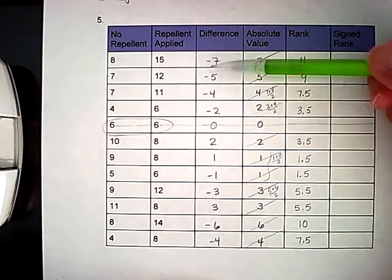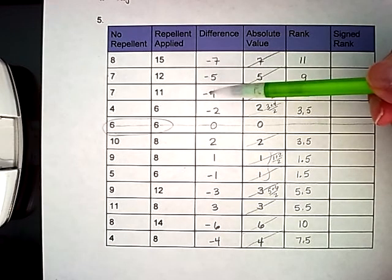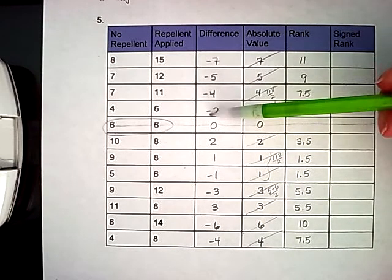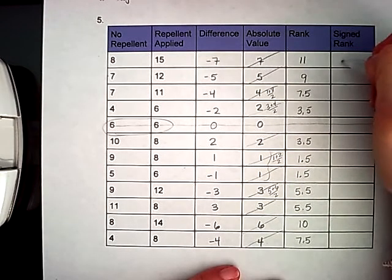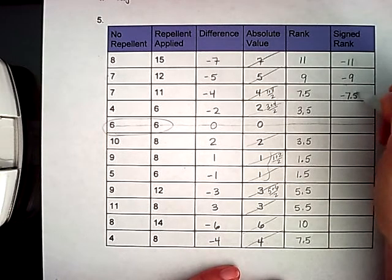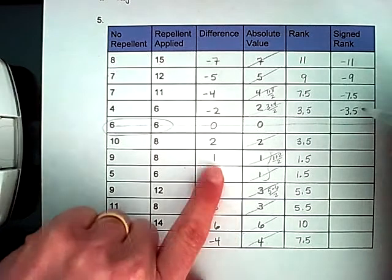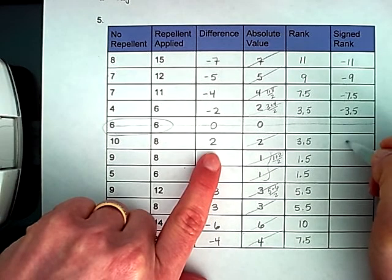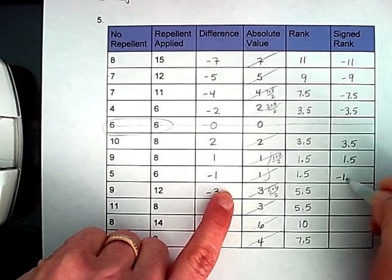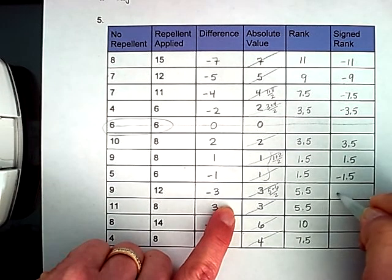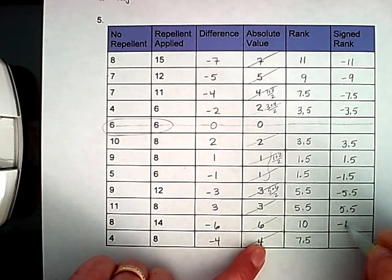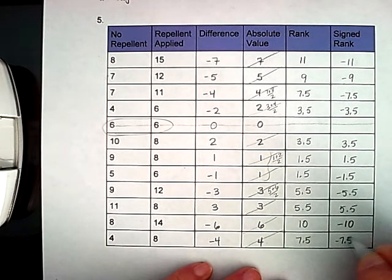All right, now I do need to know whether it was a positive change or a negative change. So I'm going to take these rankings and add these signs back to them. So this is going to have negative 11, negative nine, negative seven and a half, negative three and a half. This is going to have a positive three and a half, positive one and a half, negative one and a half, negative 5.5, positive 5.5, negative 10, and negative 7.5.